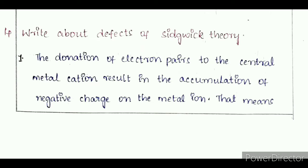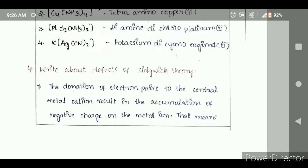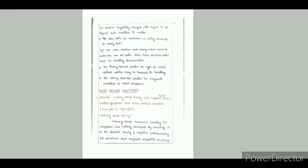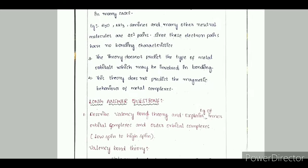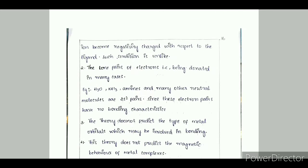The donation of electron pairs to the central metal cation results in the accumulation of negative charge on the metal ion. That means the ion becomes negatively charged with respect to the ligand. Such a condition is unlikely.